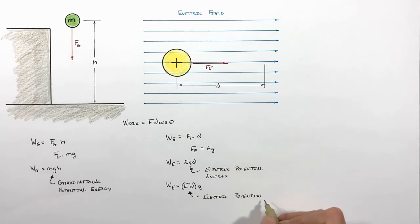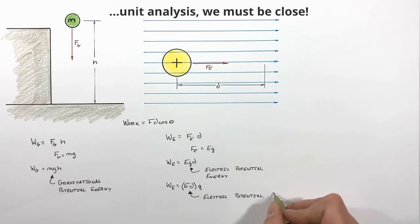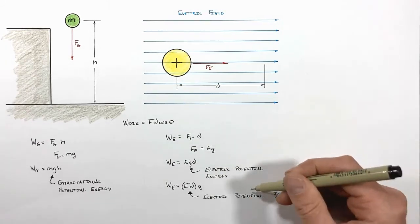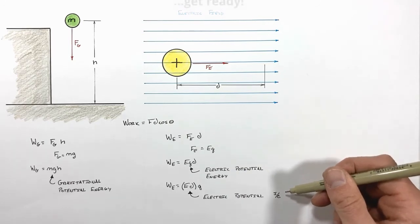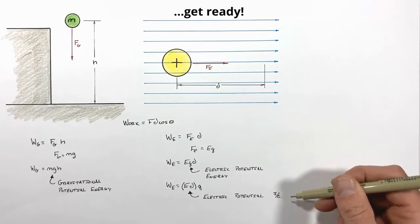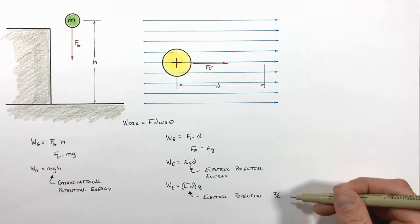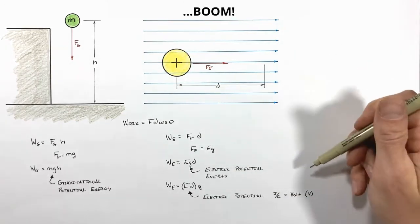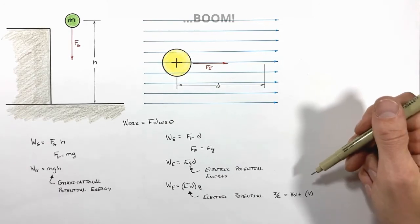If we look at the units of electric potential, we can see the units are joules per coulomb. And here kids is the big kicker in all of this. This term electric potential is so important that we give it its own special units. Rather than referring to it as a joule per coulomb, we call this a volt, like a volt from a battery or a volt from an outlet.